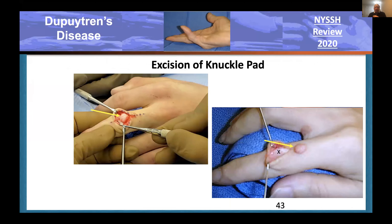The knuckle pad, for the most part, you leave alone. It is the sign of Dupuytren's, sometimes the presenting sign. They're often sore when they first appear, just like nodules, but the pain usually goes away. If they get really big, become extremely painful, or the patient is terrified it's cancer, excising them can be done. The key thing to note is there is no plane between the extensor hood and the nodule—if you damage the hood, you will end up with a boutonniere.